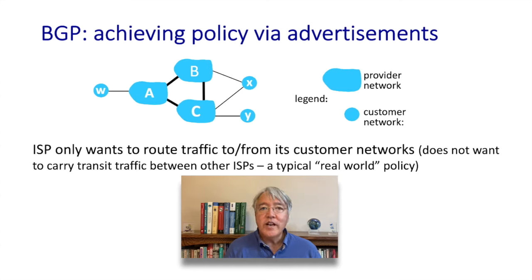In OSPF, we learned about hierarchical routing to limit the scope of full topological information even within a single autonomous system. We also learned how BGP routes to CIDR destination networks, and how a single CIDR network address can actually represent a large number of networks within an address block. And coming back to performance: at the application layer, transport layer, and even in intra-domain routing, performance matters — milliseconds count. But for inter-domain routing and BGP, policy considerations clearly dominate over performance.